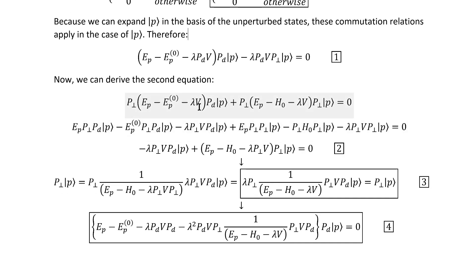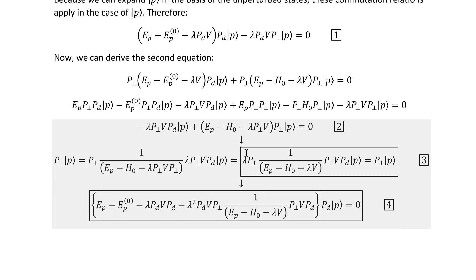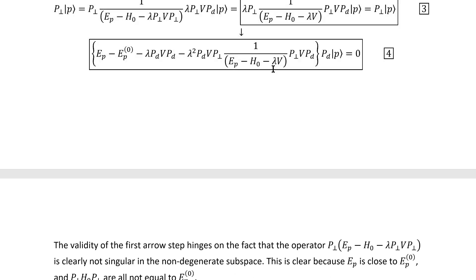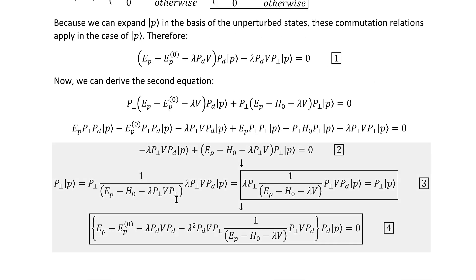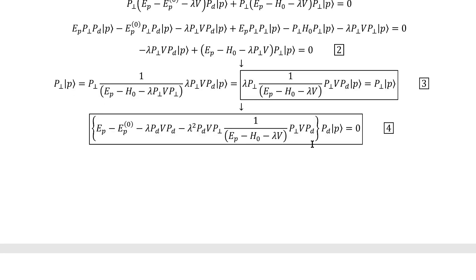Applying the other projection operator to the Schrödinger equation and working it down gets us to here. We can, however, actually rearrange this a little bit more conveniently. It turns out that this operator here, or more specifically, this one, is not singular in the degenerate subspace. This is clear because the perturbed energy eigenvalues are close to the unperturbed one, and the eigenspectrum of this projected non-degenerate Hamiltonian has no eigenvalues equal to the degenerate energy eigenvalue. That allows us to invert it like that and arrive at this final equation. This is one that we will expand. Now, the one modification that we need to make to the first one in order to get the form of it that we're actually going to expand is simply to substitute this in, which gets us to this equation.